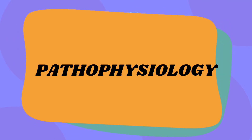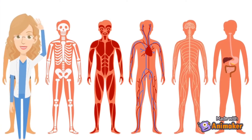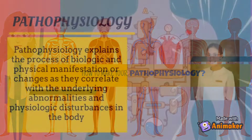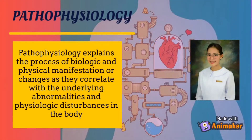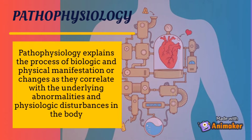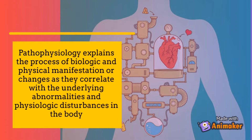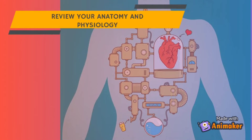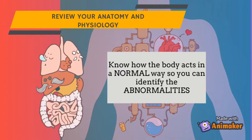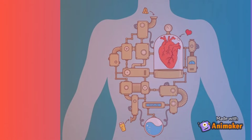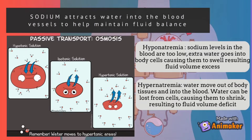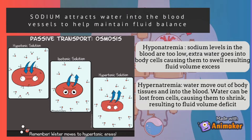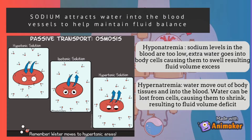First, let us learn about pathophysiology. A pathophysiology explains the process of biologic and physical manifestation or changes as they correlate to the underlying abnormalities and physiologic disturbances in the body. To review your anatomy and physiology, you need to know how the body acts in a normal way so you can identify the abnormalities. For example, sodium attracts water into the blood vessels to help maintain fluid balance. So for the abnormalities, we have hyponatremia and hypernatremia.